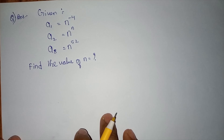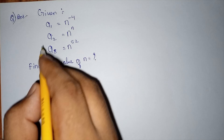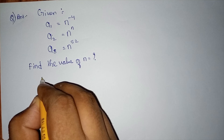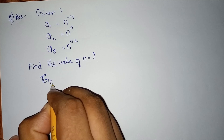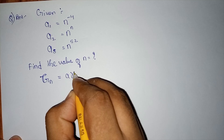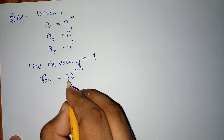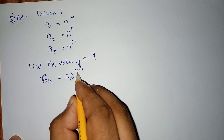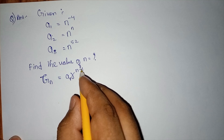Now let us start solving. We know the formula for any term in a GP: the n-th term is a times r to the power n minus 1, where a is the first term, r is the common ratio, and n is the number of the term we want to find.